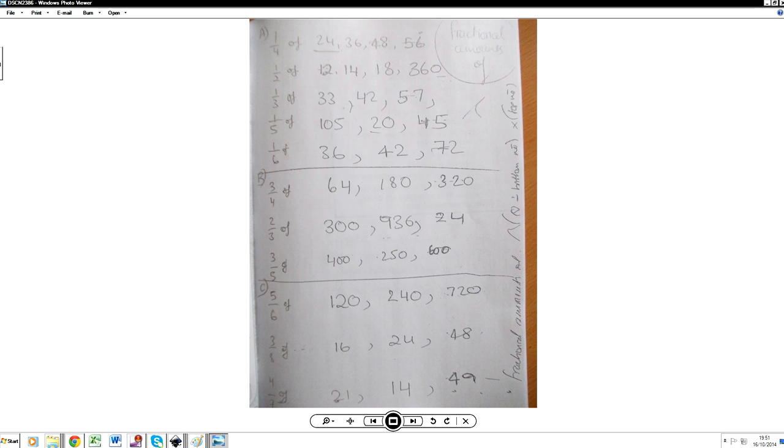So can you circle this for me please? 1 third of 42. 1 sixth of 72. Now 3 fourths of 180. And then we're doing 4 sevenths of 49. Okay, off you go. You do those questions now. Let's pause the video.